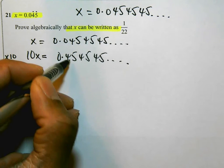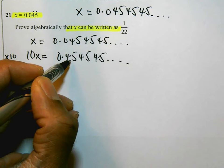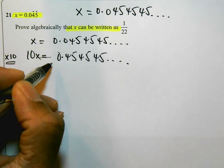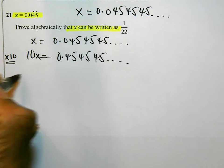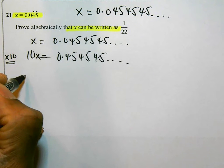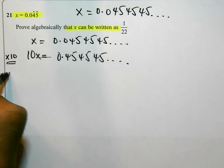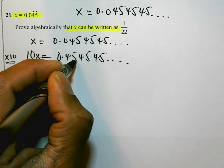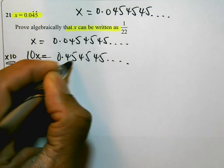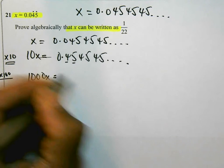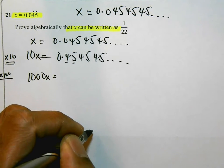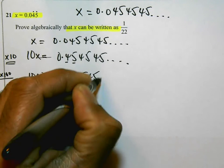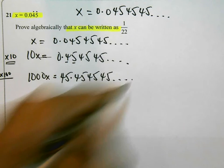What I am going to do is I'm going to bring out, because it's just 45 that's repeating, I'm going to times this now, this line by 100. So, times by 100, I'm going to get 10 times 100, which is 1000x. Times this by 100, it's going to pull out the 45 and remember the only reason I'm timesing by 100 is because it's just two digits that are repeating, so I'll get 45.454545 and so on.